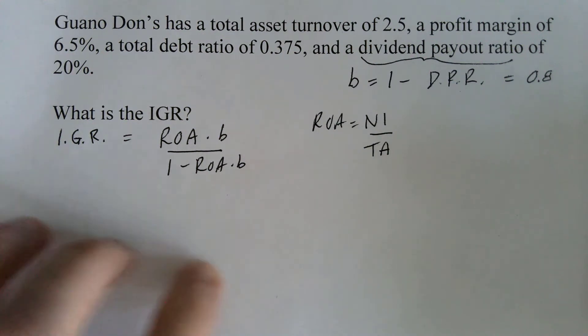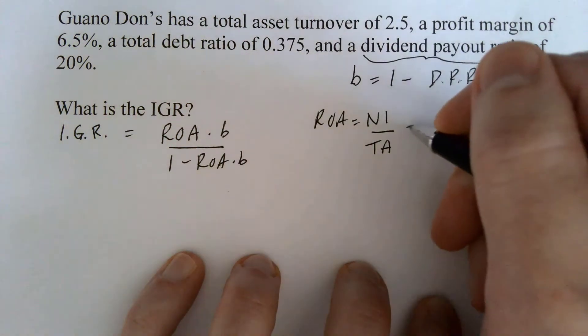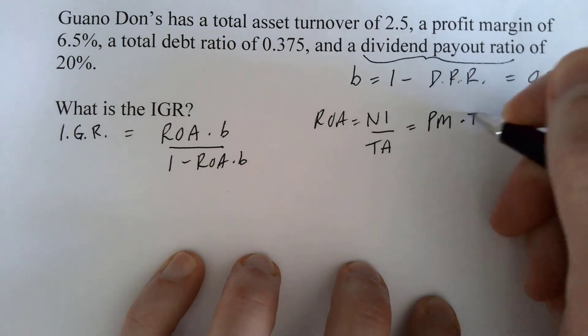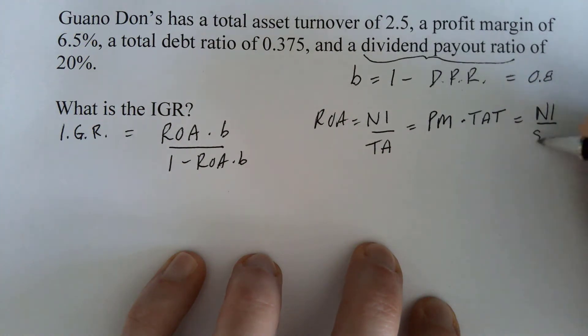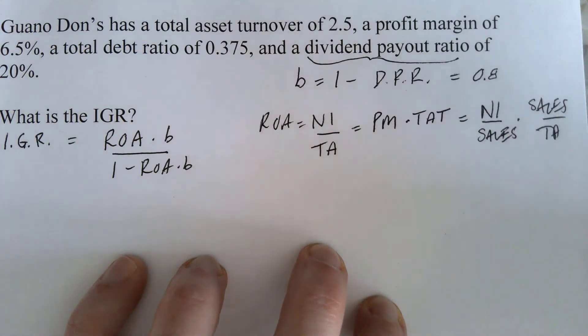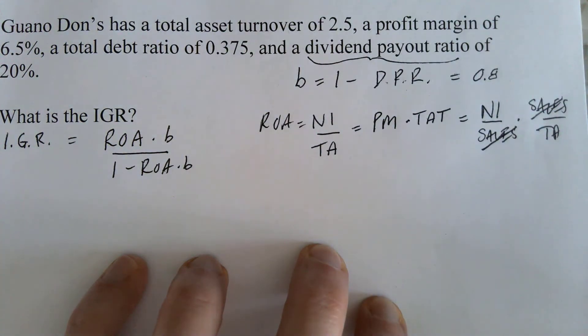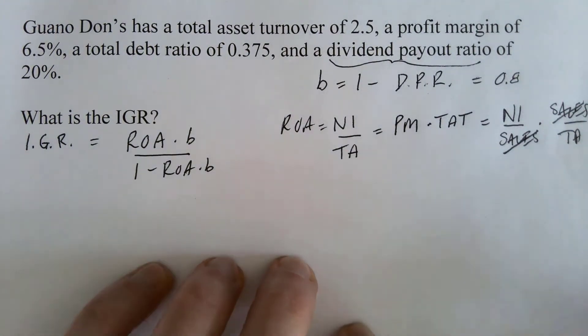But if we think back to our DuPont identity, we know that the first two things in that are profit margin and total asset turnover. And we are given profit margin. And we are not given total asset turnover, but we can figure, oh yes we are. There it is. So why does that work? Well, profit margin is net income divided by sales, and total asset turnover is sales over total assets. And the sales just cancel out. And so all we have to do is take the profit margin times total asset turnover and we'll have our ROA.